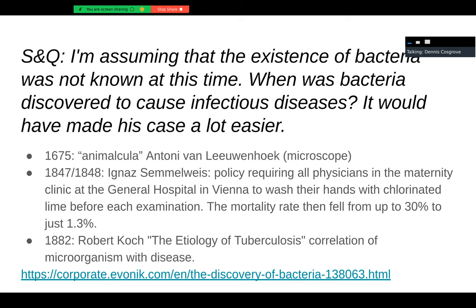Leeuwenhoek, when he first got a microscope, grabbed some pond water, threw it under there, and saw little animals — bacteria — running around. That's 1675. It takes a long time — until around 1847-48 — when a doctor in Vienna, Austria convinced physicians to start cleaning their hands before each examination. The mortality rate in that maternity clinic fell from 30% to 1.3%. And then it took Koch in 1882 to actually show a correlation of a microorganism with a disease — tuberculosis. So it takes a while from first seeing bacteria to showing it's correlated with disease.